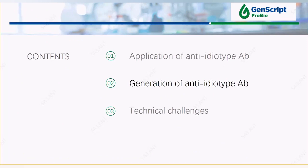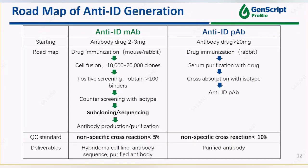I will go over the general strategy of raising anti-idiotype antibody. Currently, the major platforms for antibody generation include hybridoma, phage display, and single B-cell colony. Hybridoma is probably the most popular method due to its cost efficiency and flexibility. For monoclonal anti-ID antibody, we recommend to start with mouse immunization followed by fusion, screening, and subcloning. Monoclonal hybridoma will be scaled up for antibody purification. For polyclonal anti-ID antibody, rabbit or goat are preferred for immunization followed by antigen affinity purification and cross-absorption with isotype control.